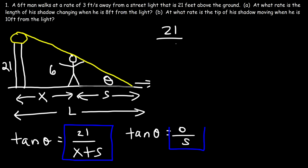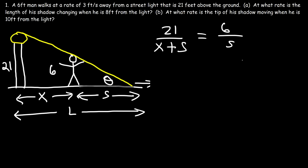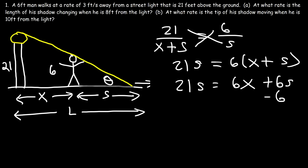So we have this so far. Whenever you have two fractions separated by an equal sign, you can cross multiply. So if we cross multiply, we're going to have 21S is equal to 6 times X plus S. Now let's distribute 6. So this is going to be 6X plus 6S. Next, we can subtract both sides by 6S. So 21 minus 6 is 15. So we have 15S is equal to 6X.